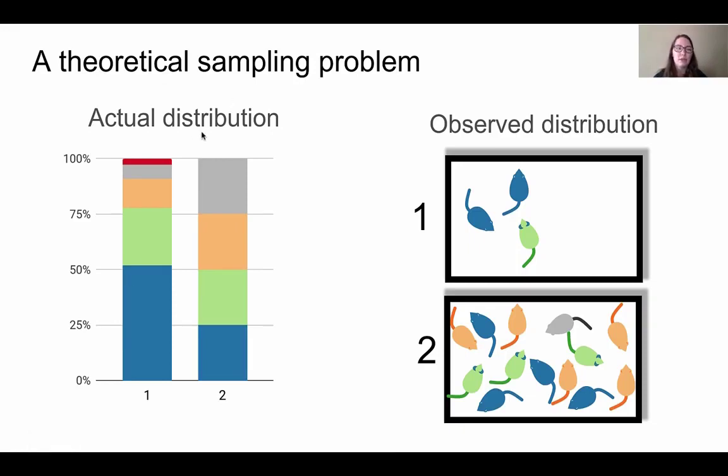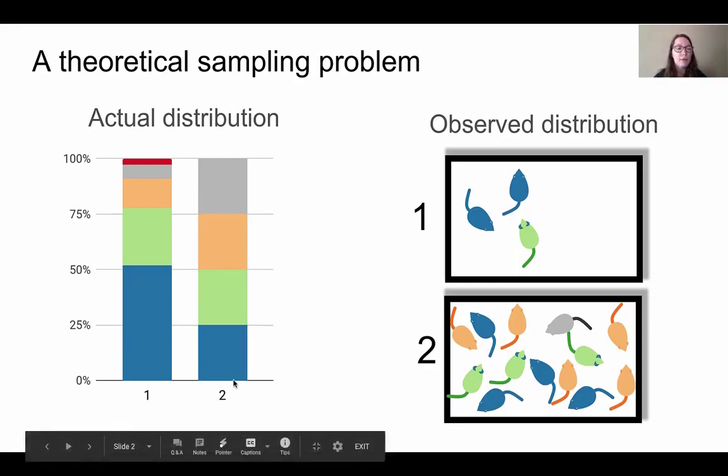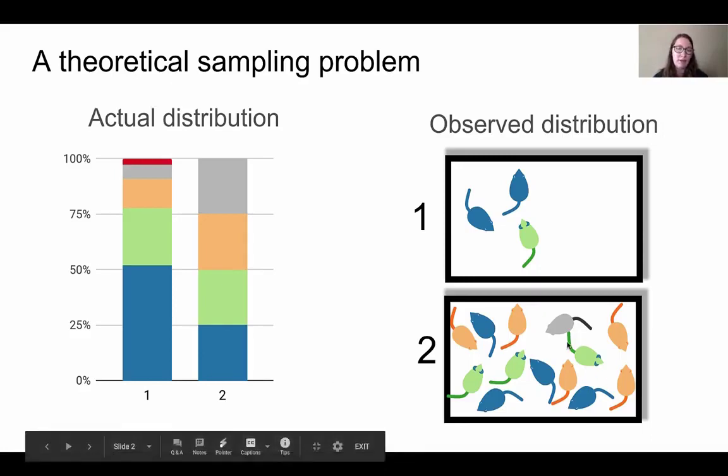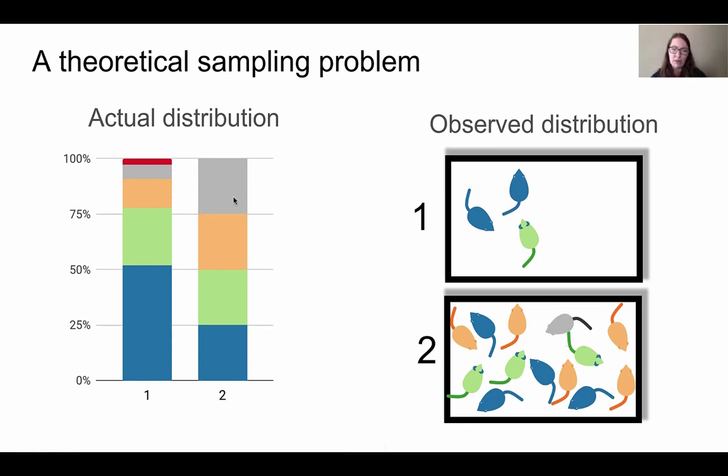When we compare the actual distribution versus observed of sample two, it's a little better but not perfect. For example, this gray mouse looks like it's present only one time, but in the actual distribution it should make up about 25 percent of the sample.